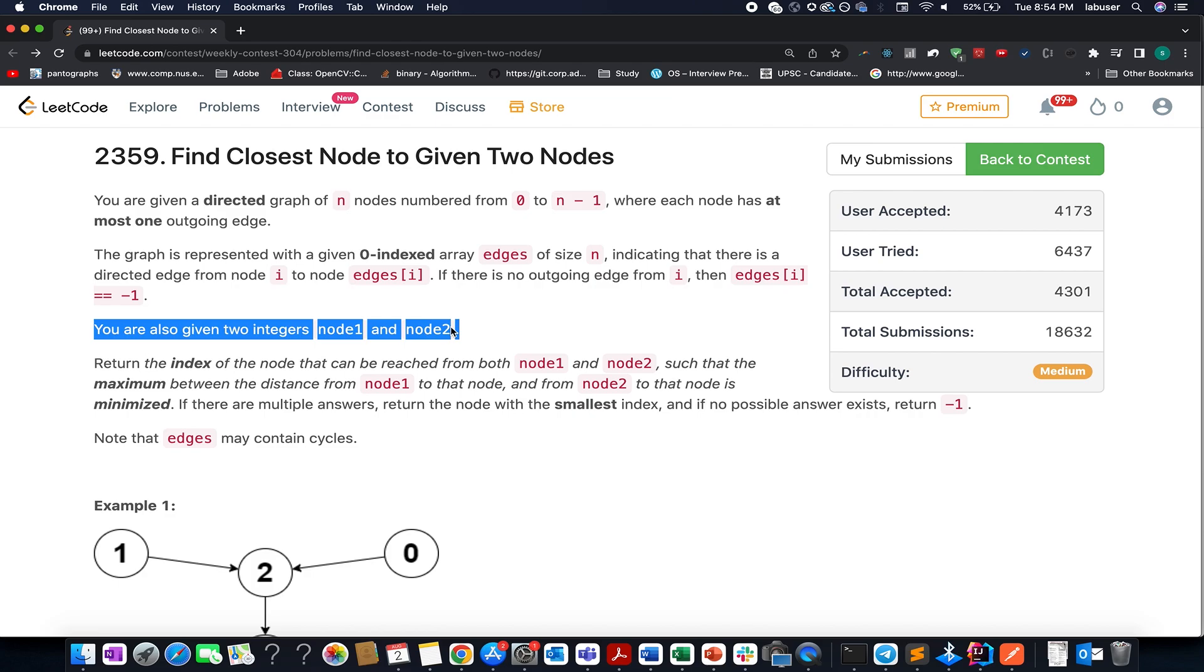What we need to do is return the index of that particular node through which both nodes n1 and n2 are reachable such that the maximum distance from n1 to that node and from n2 to that node is minimized. Also, the second constraint says if there are multiple answers, return the node with smallest integer. And if no possible answer exists, we have to return minus one.